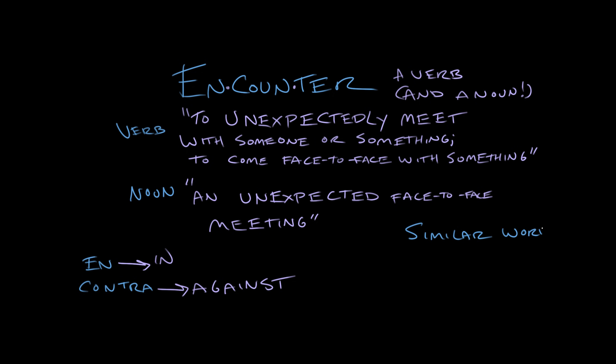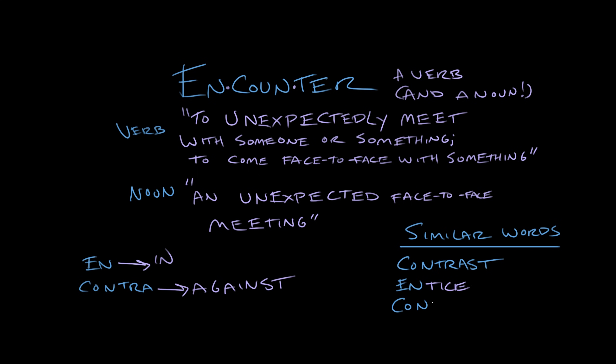Here are some that I came up with. There's contrast — to show differences. If I'm contrasting an apple with an orange, I'm holding one up against the other and saying, what's different between these two fruits? Entice — to draw in, to tempt. The scent of freshly baked cookies enticed you into the kitchen. And contrary — a word meaning opposite, opposed, against something. If you say you're in favor of cookies and I'm opposed to cookies, I'll say, on the contrary, my friend. I reject your cookie proposal in favor of beans.